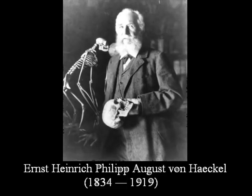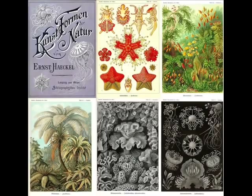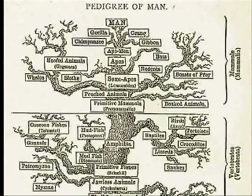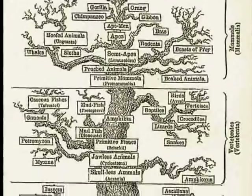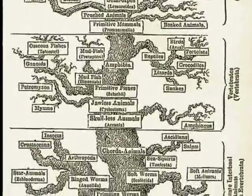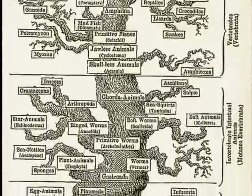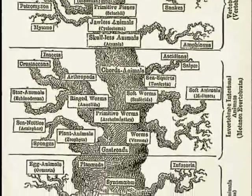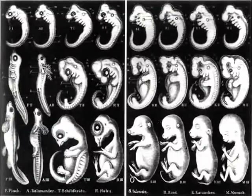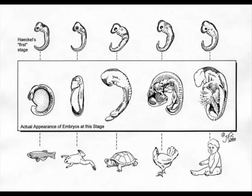Ernst Haeckel was a pioneer zoologist and taxonomist whose numerous contributions to biology go largely unnoticed compared to a couple rather odd errors. First, he proposed that ontogeny recapitulates phylogeny, suggesting that embryonic development reflects the organism's evolutionary ancestry. To illustrate this, he produced about a hundred drawings of embryos at various stages, but he later admitted that about a half-dozen of them were falsified due to a lack of visual references.